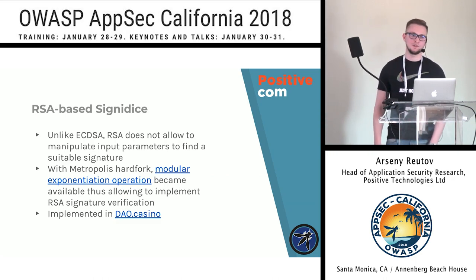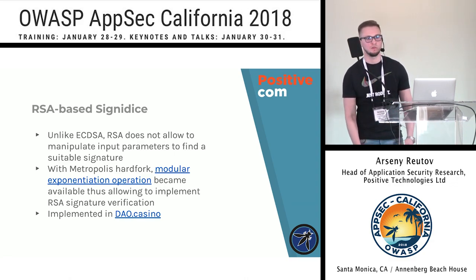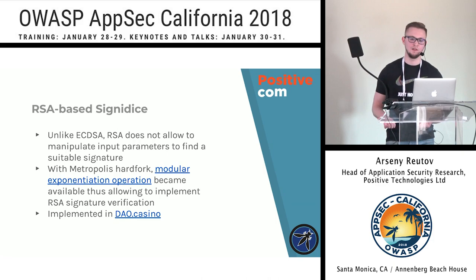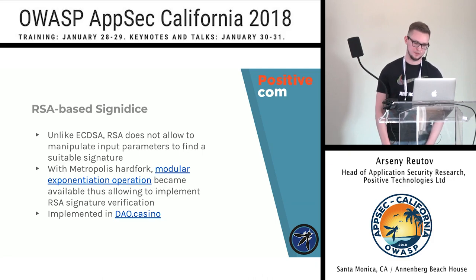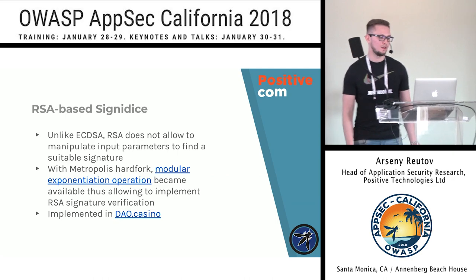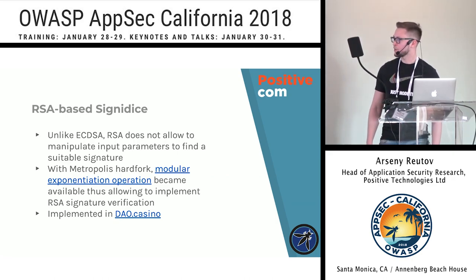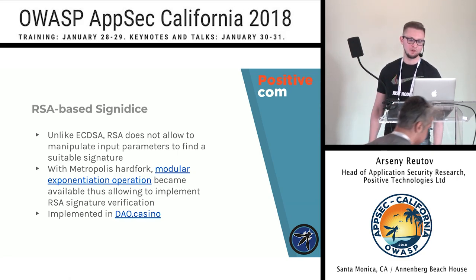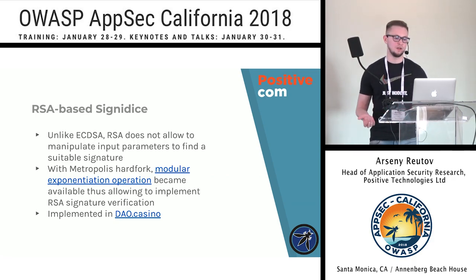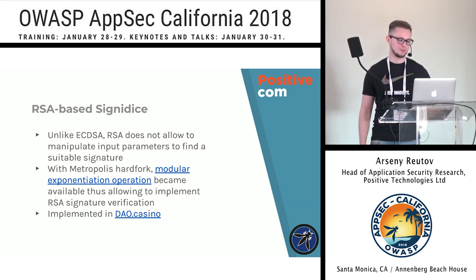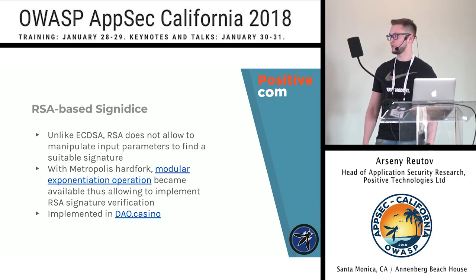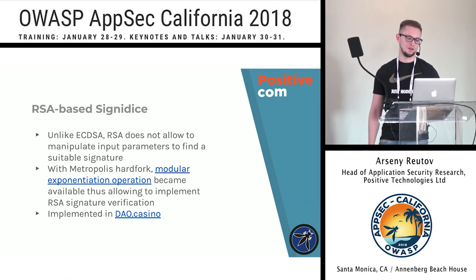The correct approach is using RSA-based signatures, because in RSA you cannot manipulate input parameters in that way. RSA is safe against this type of attack. Thanks to the Metropolis hard fork of Ethereum, modular exponentiation became available, so anyone can implement this algorithm in their smart contracts. There are open source implementations of RSA for Ethereum available.